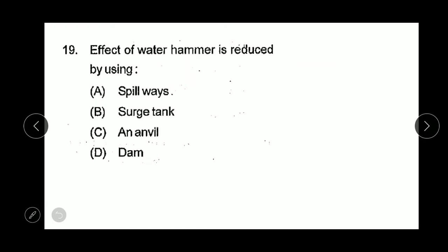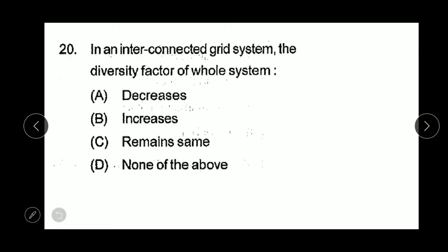The effect of water hammer is reduced by using surge tank. In an interconnected grid system, the diversity factor of the whole system increases.